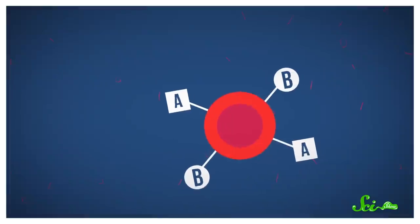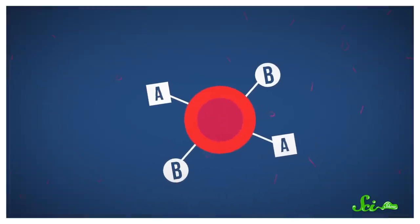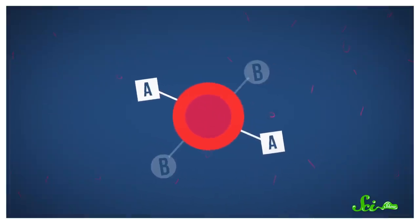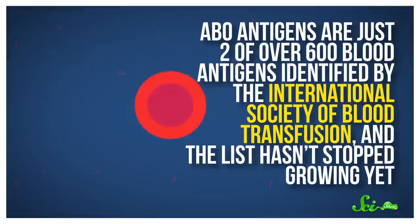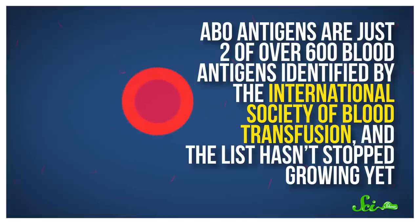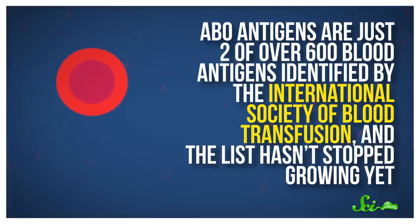If you have AB blood, that means you have both the A and B antigens in the ABO blood group. You could be just A, or just B, or if you're O, you don't have either. But those ABO antigens are just two of over 600 blood antigens identified by the International Society of Blood Transfusion, and the list hasn't stopped growing yet.